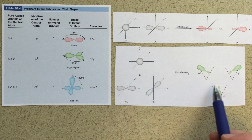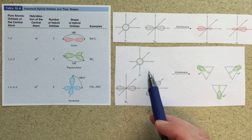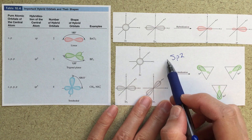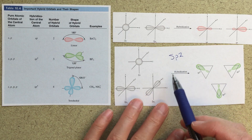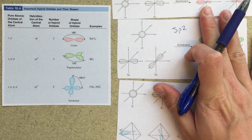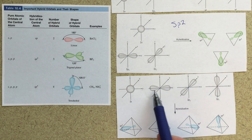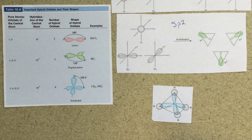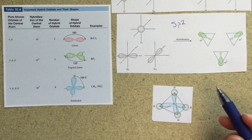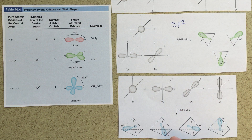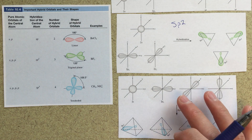Here is the picture for sp2 hybridization: I take the s orbital and two of the p orbitals — that's why it's called sp2, one s and two p orbitals combined to form the sp2 hybridized system. For sp3, I combine all three p orbitals and one s orbital to form four new orbitals. You can see the tetrahedral arrangement where each blue lobe is a hybridized orbital. This is my sp3 hybridized system: three p orbitals plus one s orbital combined to form four new orbitals — four orbitals in, four orbitals out.